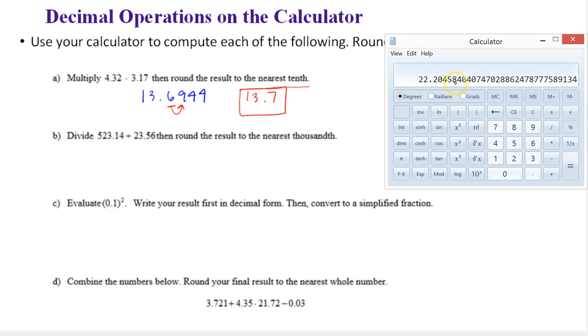Notice this decimal is going on forever. I can't even write this out, or I don't want to. And it actually keeps going. It never stops. But the calculator is actually rounding. But we want the rounded version to the nearest thousandth.